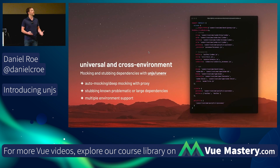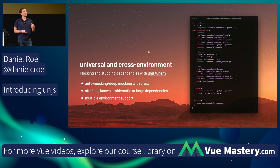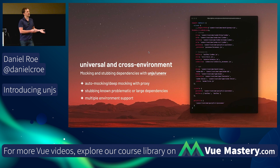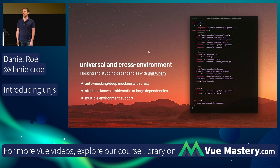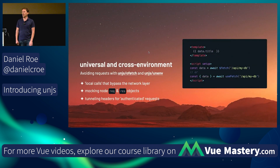We do a lot in Nuxt that has to be cross-environment — deployable to Cloudflare Workers, Deno, Bun, or anywhere. One utility enabling that is unenv. It includes lots of stubs, mocks, and shims you can drop into a build pipeline so that libraries with hard Node.js dependencies are replaced with compatible ones for your target environment. You can also use it to replace large dependencies that aren't needed — useful in development but not wanted in a worker bundle.